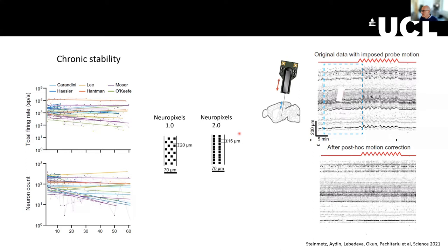Another change is the arrangement of sites on the shank, which is now linear. This might seem like a small difference, but besides tighter spacing, it allows us to undo brain movement much better, thanks also to improved software. To demonstrate this: we first have the natural movement of the brain relative to the probe, and then the probe is deliberately advanced in and out rhythmically. Using this geometry and software, we're now able to undo this motion — both natural brain motion from breathing and heartbeat, and imposed motion.